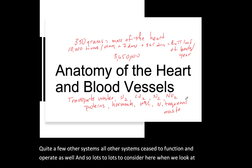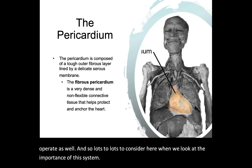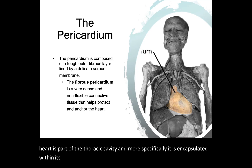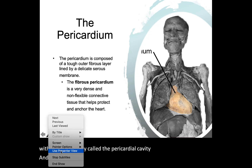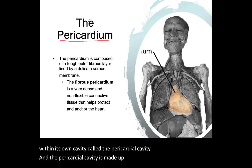The location of the heart: remember, the heart is part of the thoracic cavity, and more specifically, it is encapsulated within its own cavity called the pericardial cavity. The pericardial cavity is made up of a structure called the pericardium. So the heart resides within the pericardial cavity.